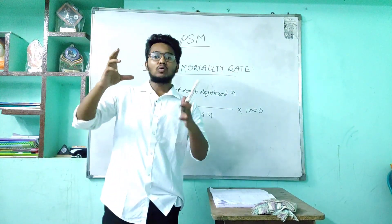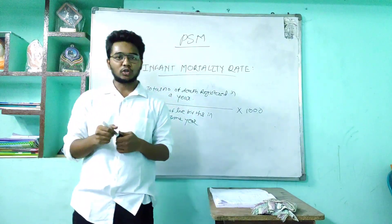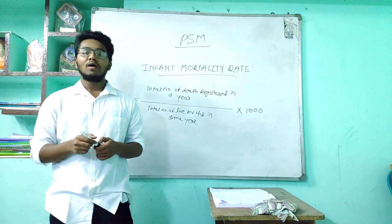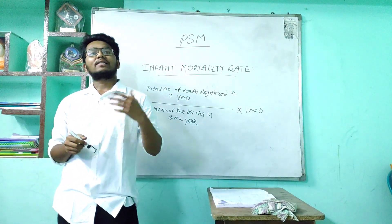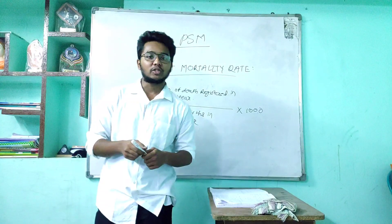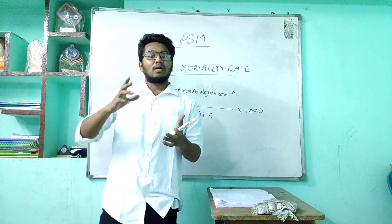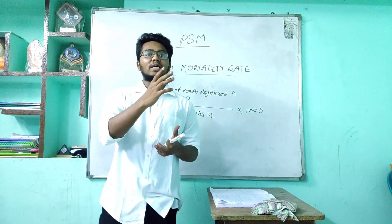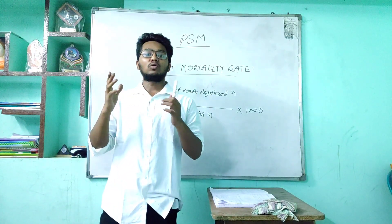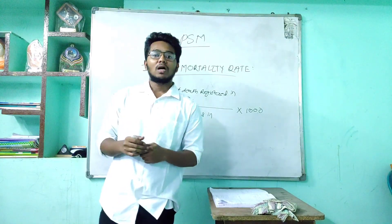It is called a ratio because we compare two quantities. Another example of ratio is the doctor-population ratio, in which we compare how many doctors there are to a definite number of the population.